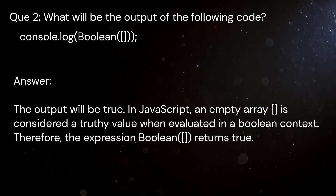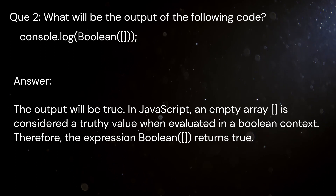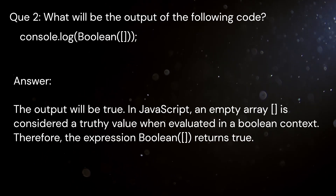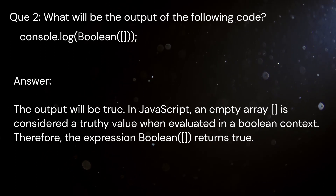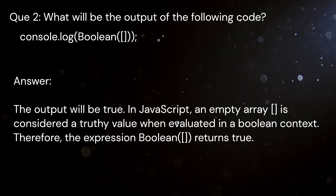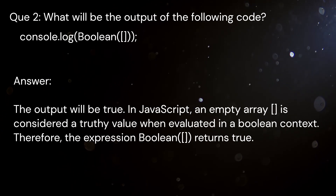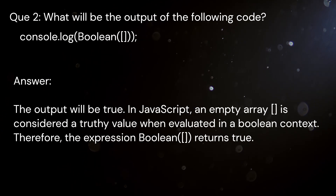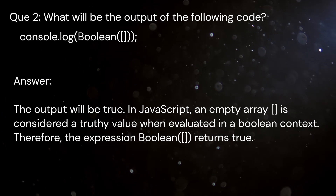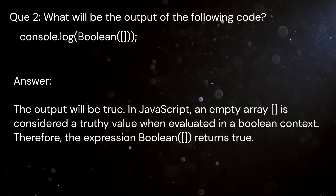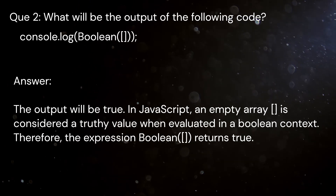Question 2: What will be the output of the following code? console.log(Boolean([])) — Boolean of an empty array. Answer: The output will be true. In JavaScript, an empty array is considered a truthy value when evaluated in a Boolean context. Therefore, the expression Boolean([]) returns true.